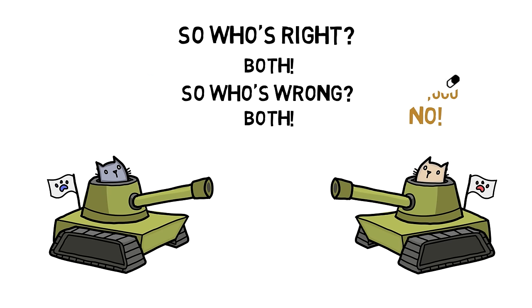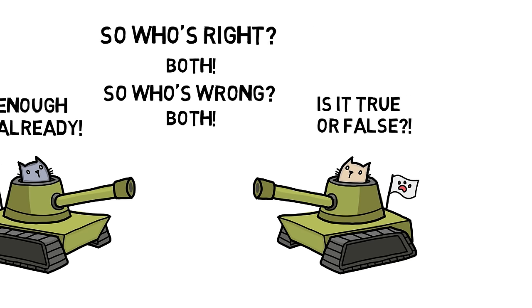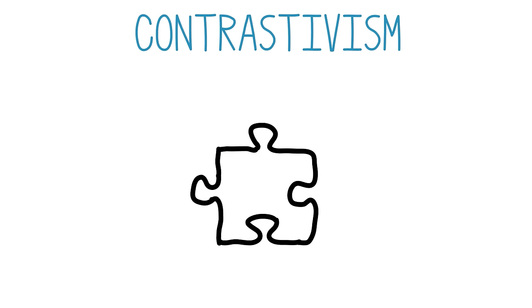Now our critics really get angry: 'Enough already — is it true or false that the millionaire ought to give $10,000?' Contrastivists again reject that question as too simple to answer. Overall, the idea behind contrastivism is that philosophers get themselves wrapped up in paradoxes and puzzles and cannot see any way out because they do not make their contrasts explicit.